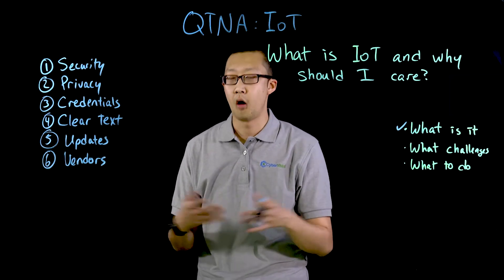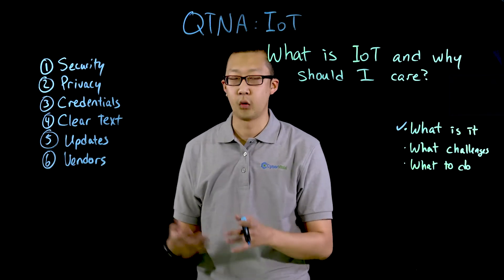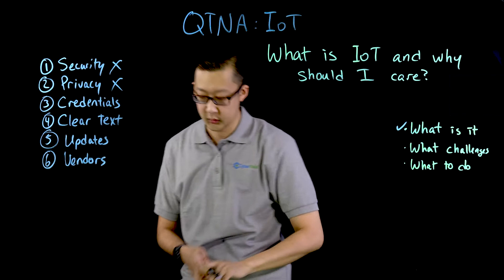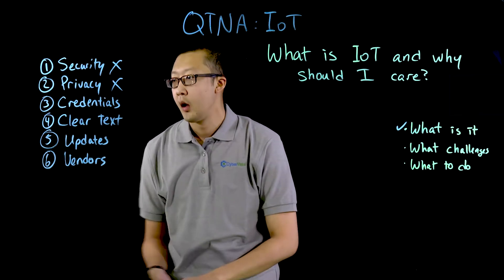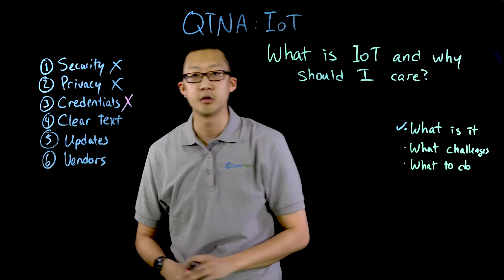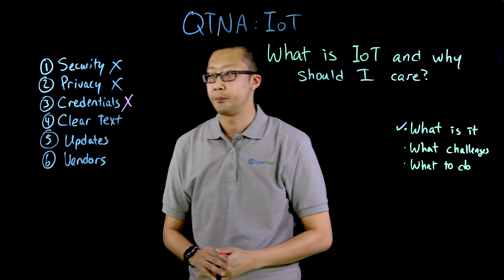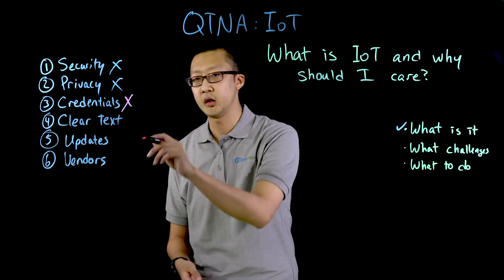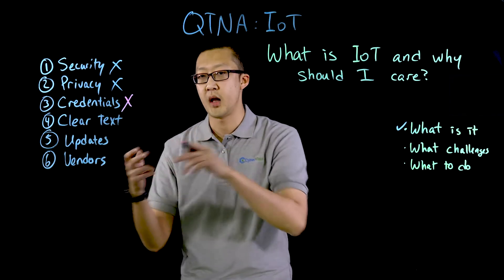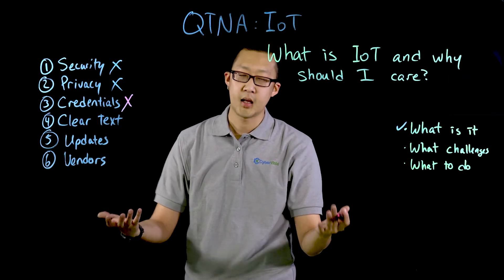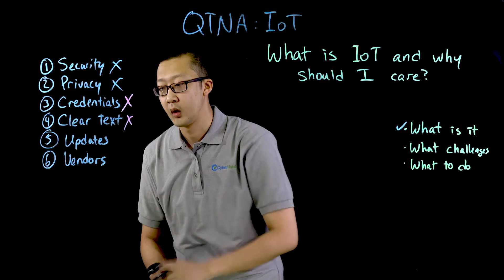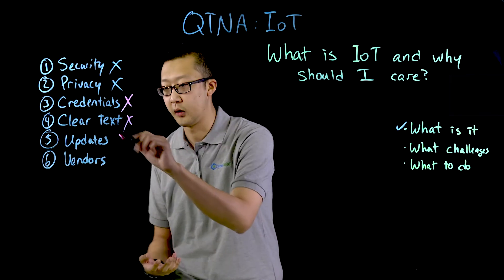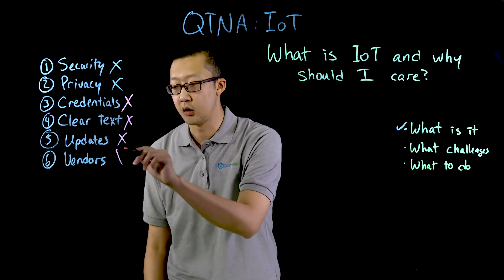A lot of these IOT devices aren't built with security in mind — they're built for ease of use or functionality. There's no security and no privacy controls. A lot of the credentials come with default or vendor-generated credentials, and oftentimes you don't even have to change the passwords. It also uses clear text, meaning these credentials or any information sent back and forth through the internet can be read by anybody — it's not encrypted. Also, a lot of IOT devices don't have regular updates to their firmware or software because the vendors don't support that.